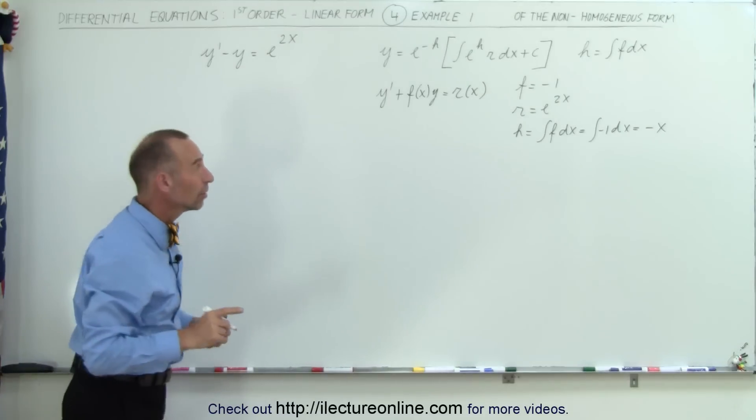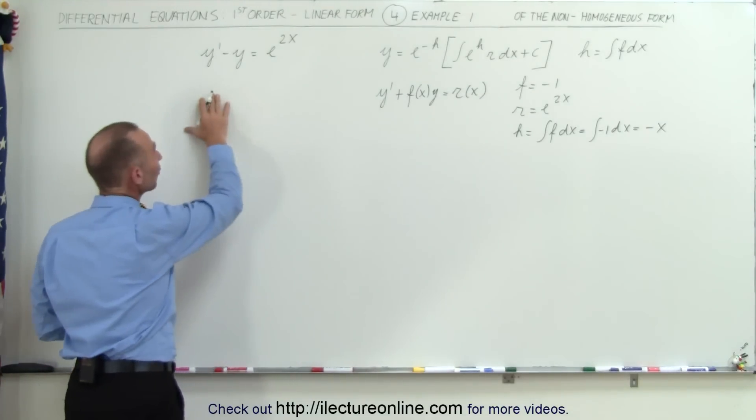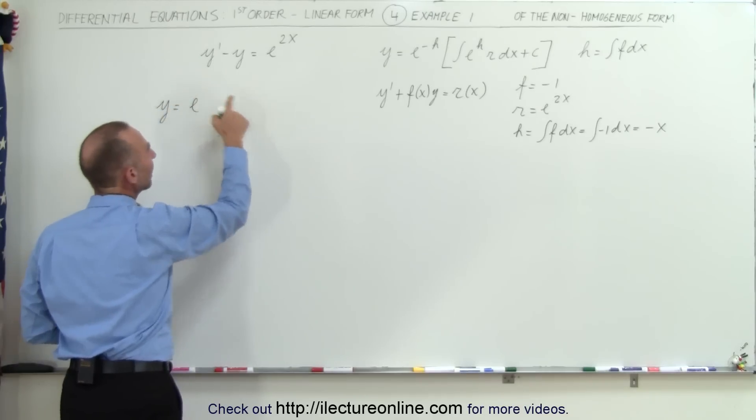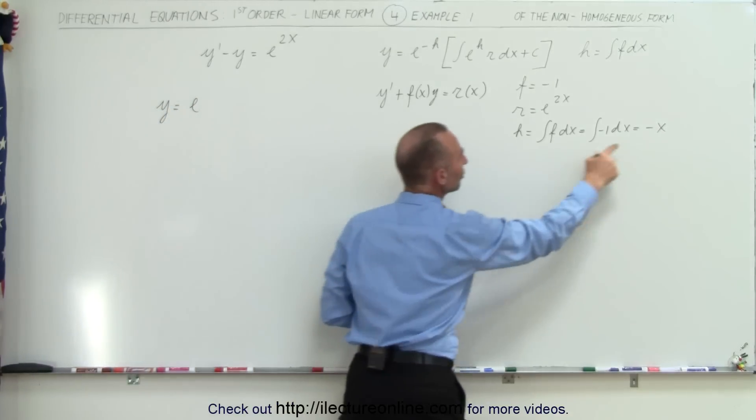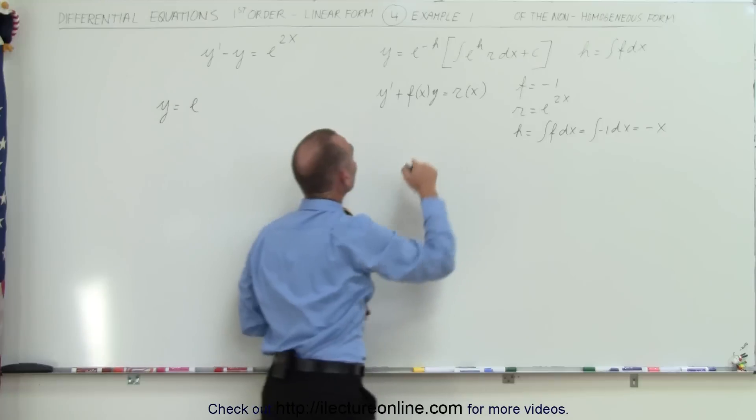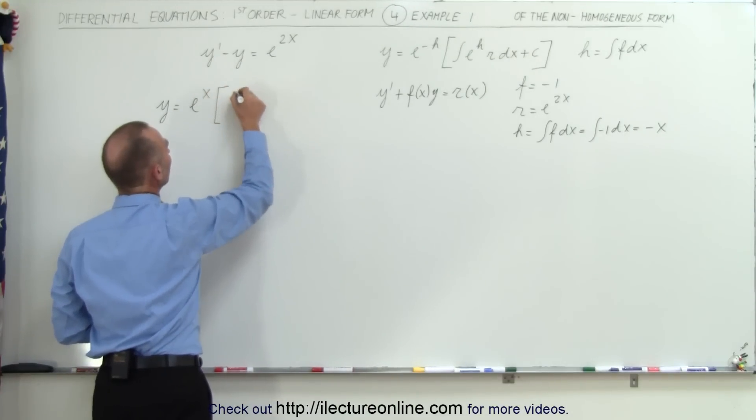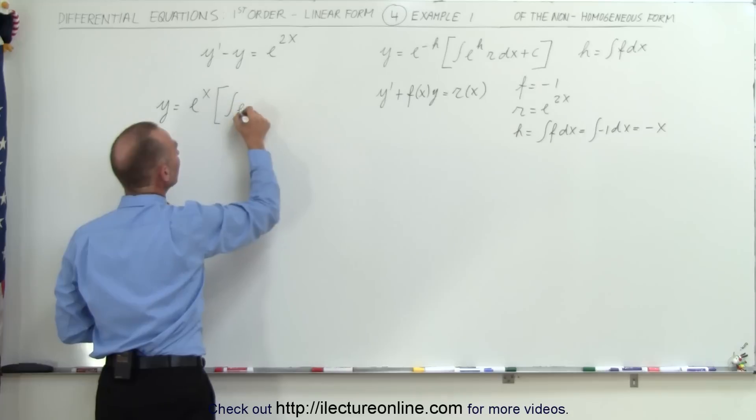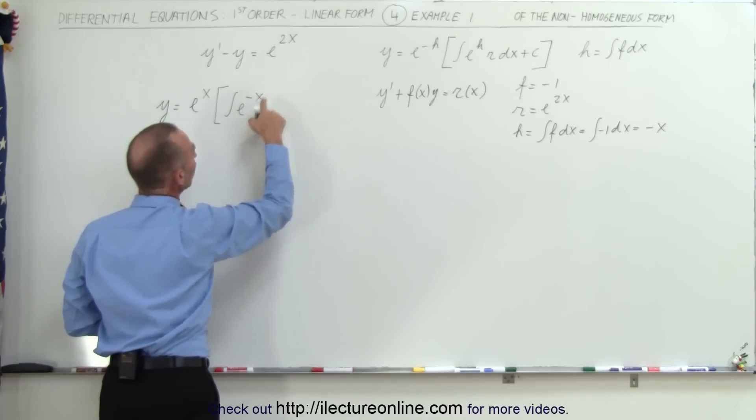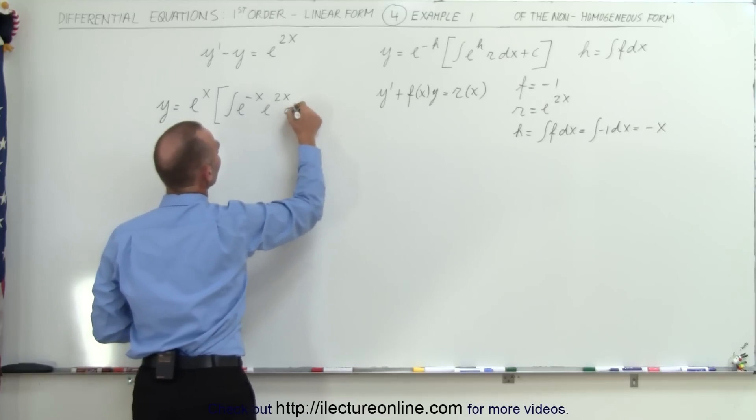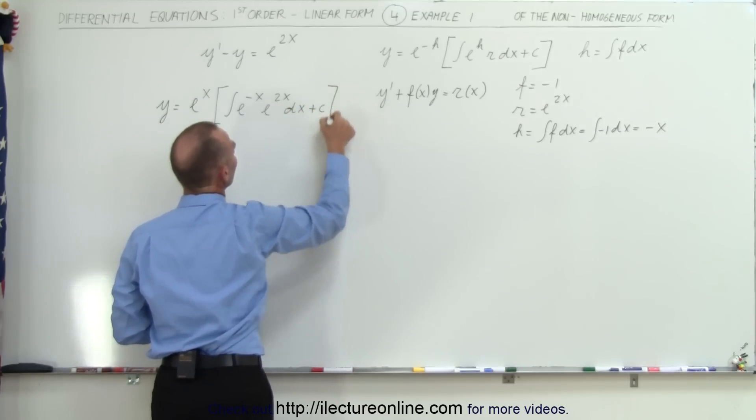Okay, having that as our intermediate solution, now we come over here. Now we realize that y is equal to e to the minus h. Now since h is equal to minus x, e to the minus h will be e to the x times the integral of e to the h, which is e to the minus x times r, r is equal to e to the 2x times dx plus a constant of integration.